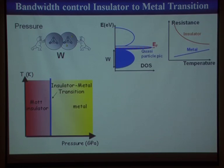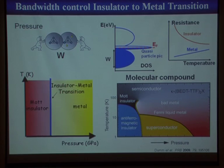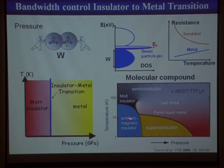In real systems it's a little more complicated. For example, in the kappa-chlor system, you find Mott insulating phases on the left part of the diagram — either paramagnetic Mott insulators or antiferromagnetically ordered Mott insulators — and metallic phases on the right part. In this kappa-chlor system, superconductivity also arises at low temperature.